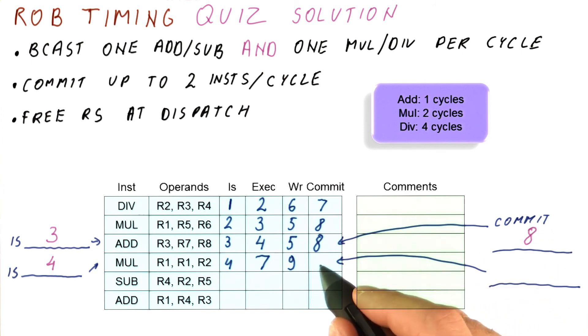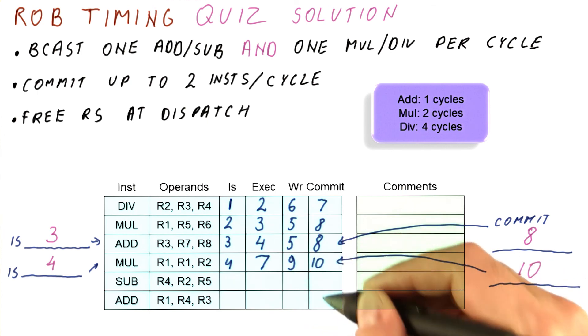And now, finally, we need to figure out when does the multiplication commit? Well, it cannot commit in cycle nine because it doesn't have a result written yet then. But it will try to commit in cycle ten. And by that time, previous instructions have committed, we have a result. So indeed, it commits in cycle ten. So we can write ten here.